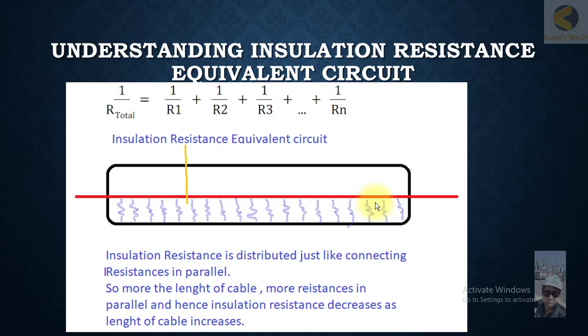If you keep on adding resistance in parallel, the total resistance will keep on decreasing. And that's why the insulation resistance of a cable or any equipment, when you increase the length of the insulation, the value of insulation resistance will keep on decreasing. For example, if you are testing the insulation resistance of a cable of 100 meters...